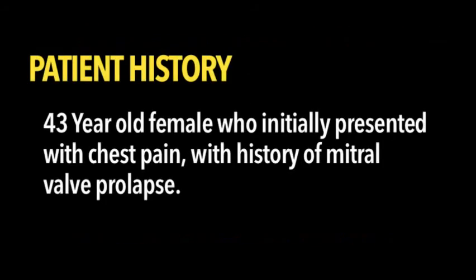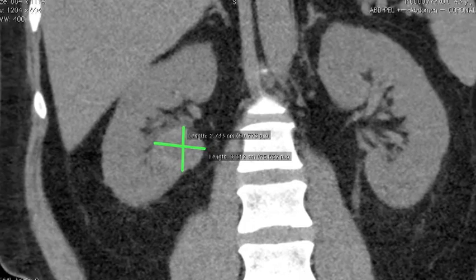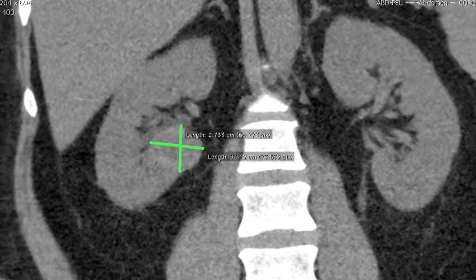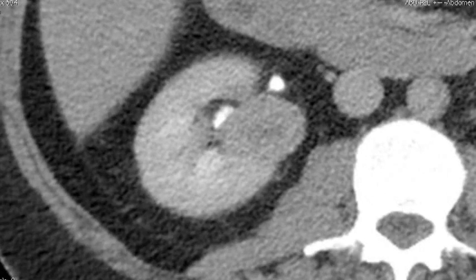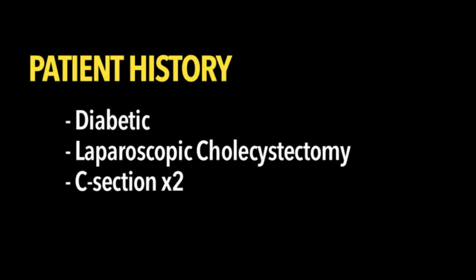The patient is a 43-year-old female who initially presented with chest pain, having a history of mitral valve prolapse. A CT scan was performed as part of the workup, and an incidental renal mass was found. Of note, the patient is a diabetic and has had a previous history of laparoscopic cholecystectomy and C-sections times 2.